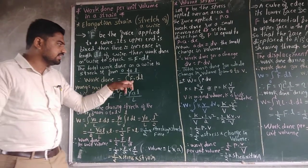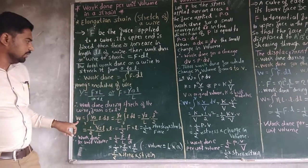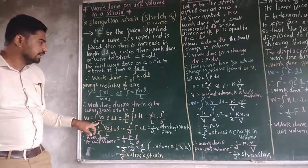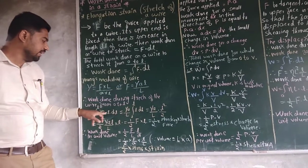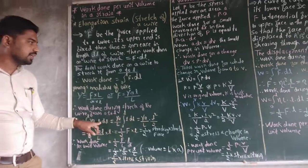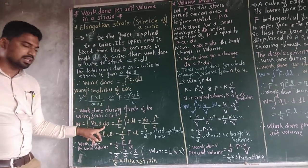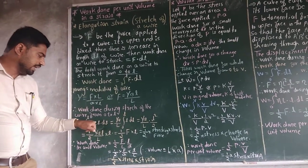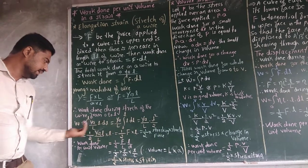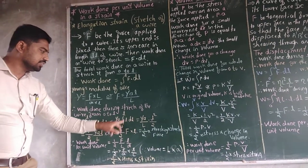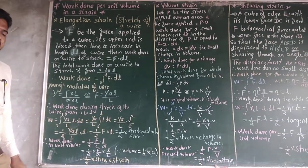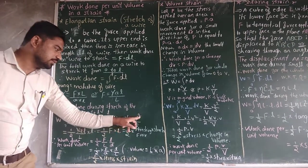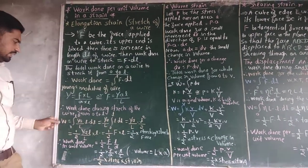Now put this F value into the work equation. It becomes W equals integration from 0 to L of (Y·A·L / capital L) into DL. Take the constant terms Y, A, and capital L outside the integral. The remaining integration is of L·dL, and the integration of L is L squared by 2.